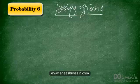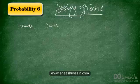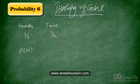Before I explain further, let's talk about the two sides of a coin. Each coin has two faces — one is called heads and the other is called tails. As long as the coin is fair, the probability of getting a head is 1/2 and the probability of getting a tail is also 1/2. So P(H) = 1/2 and P(T) = 1/2.